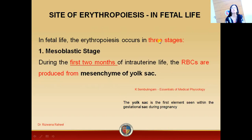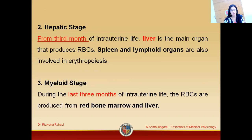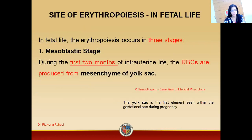Now what are the stages of erythropoiesis? In fetal life, erythropoiesis occurs in three stages. The first stage is the mesoblastic stage, the second stage is the hepatic stage, and the third stage is the myeloid stage.